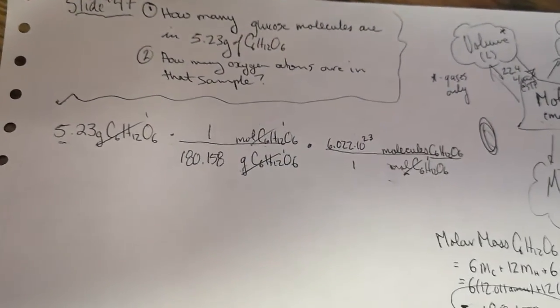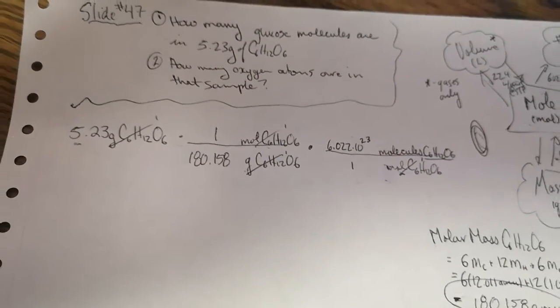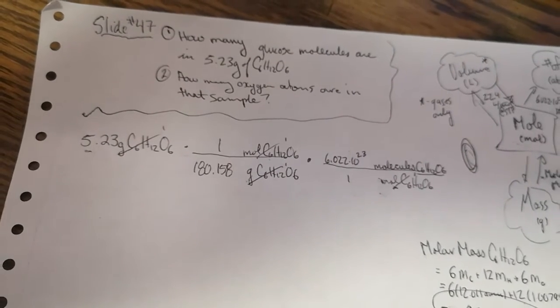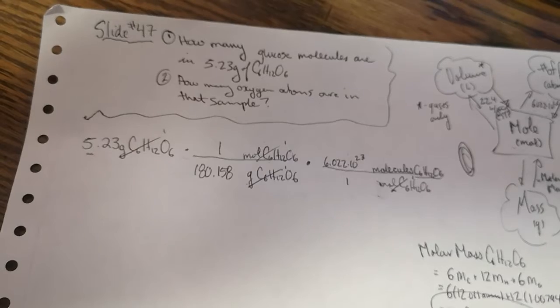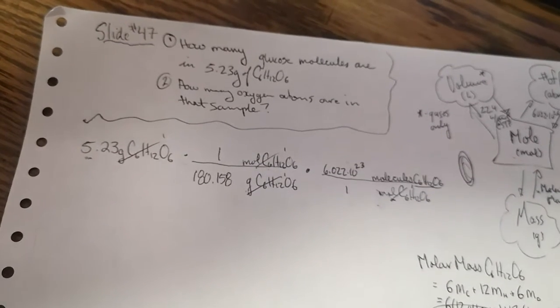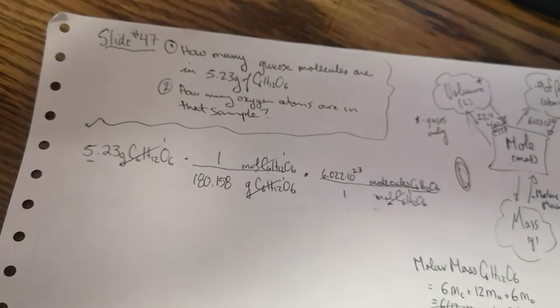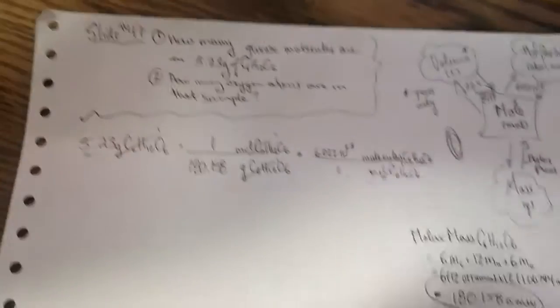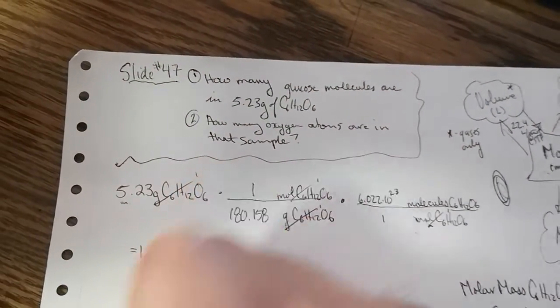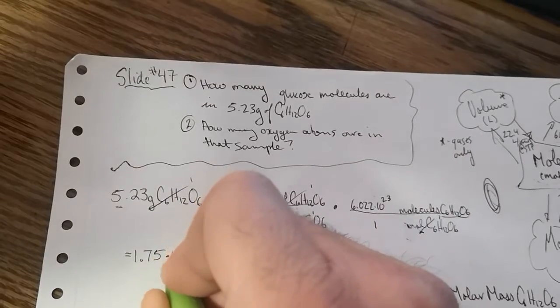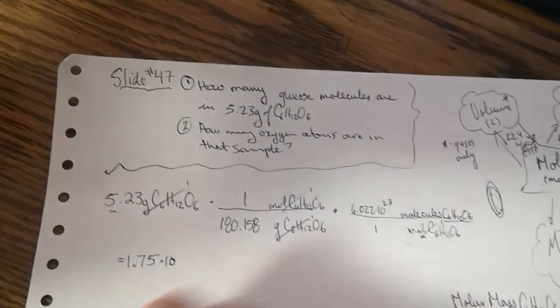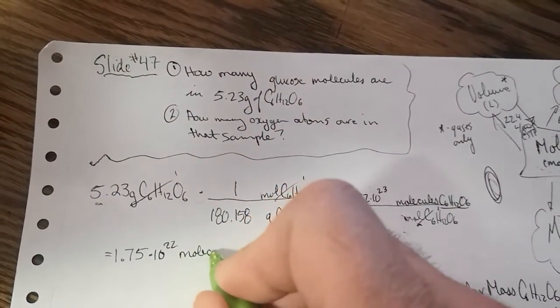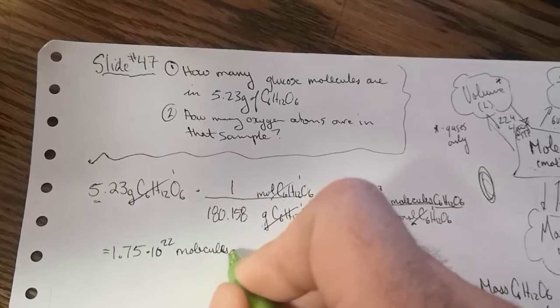Let's punch that into our calculators. So we've got 5.23 divided by 180.158. It gives us 0.029. We're going to multiply that by 6.022 times 10 to the power of 23. And we end up with 1.75 times 10 to the power of 22. And if we look at the units, it's molecules of glucose.